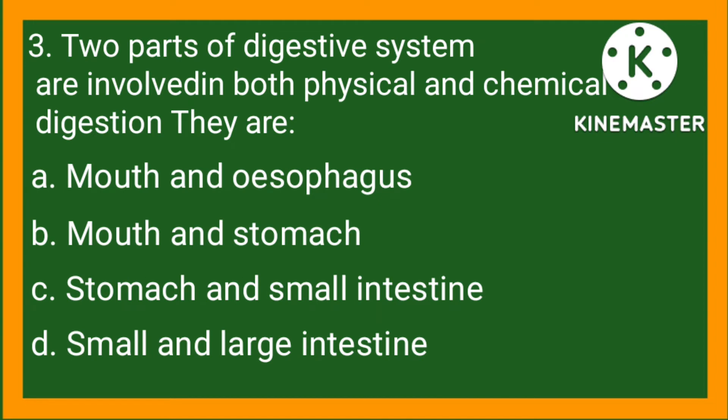2 parts of the digestive system are involved in both physical and chemical digestion. The options are: A, mouth and esophagus; B, mouth and stomach; C, stomach and small intestine; D, small and large intestine. So the right option is B, mouth and stomach.